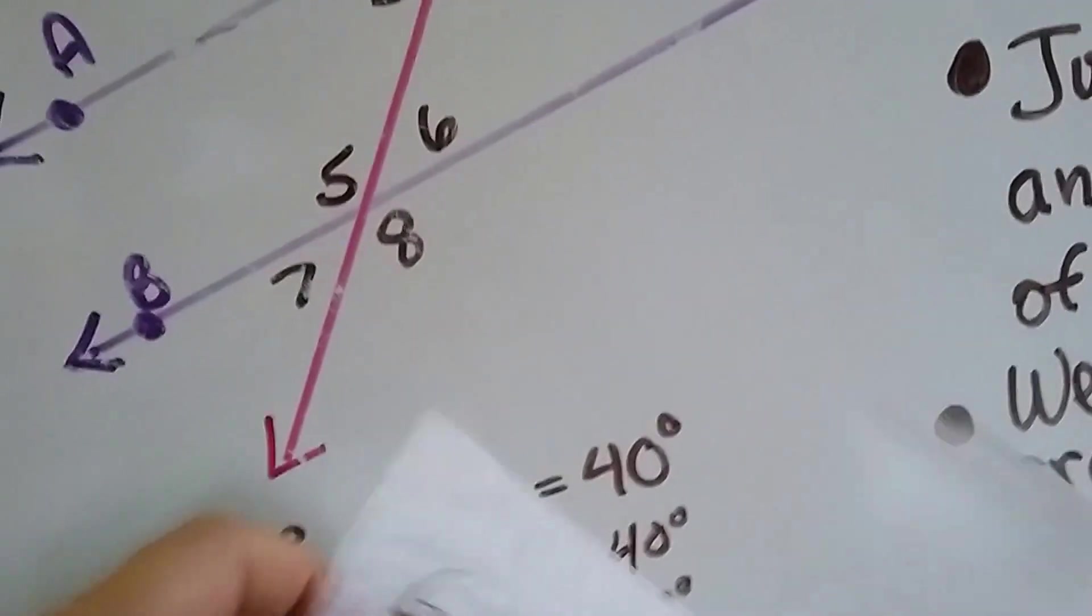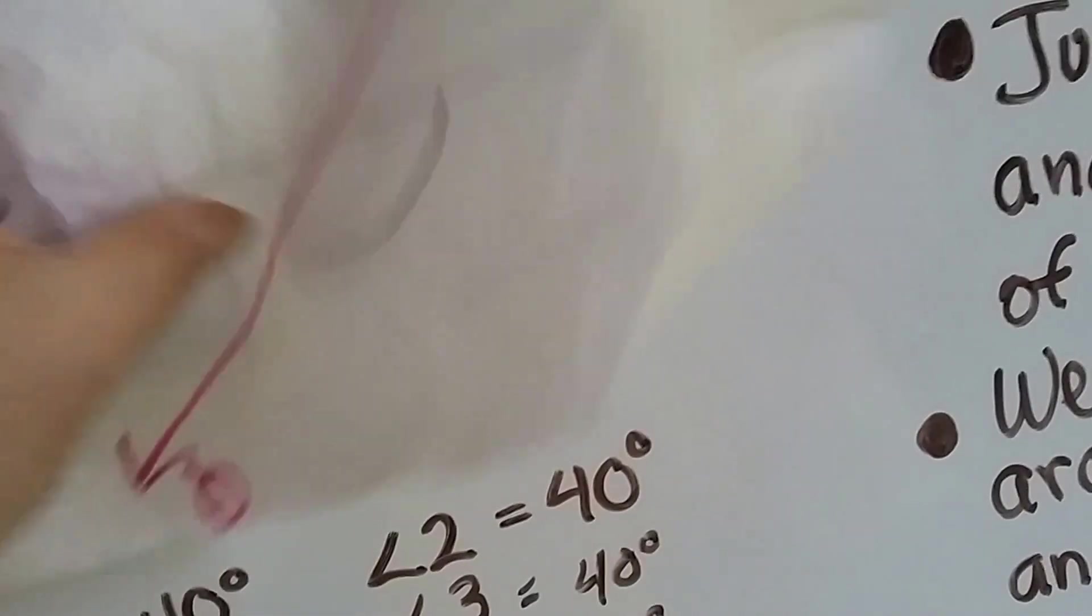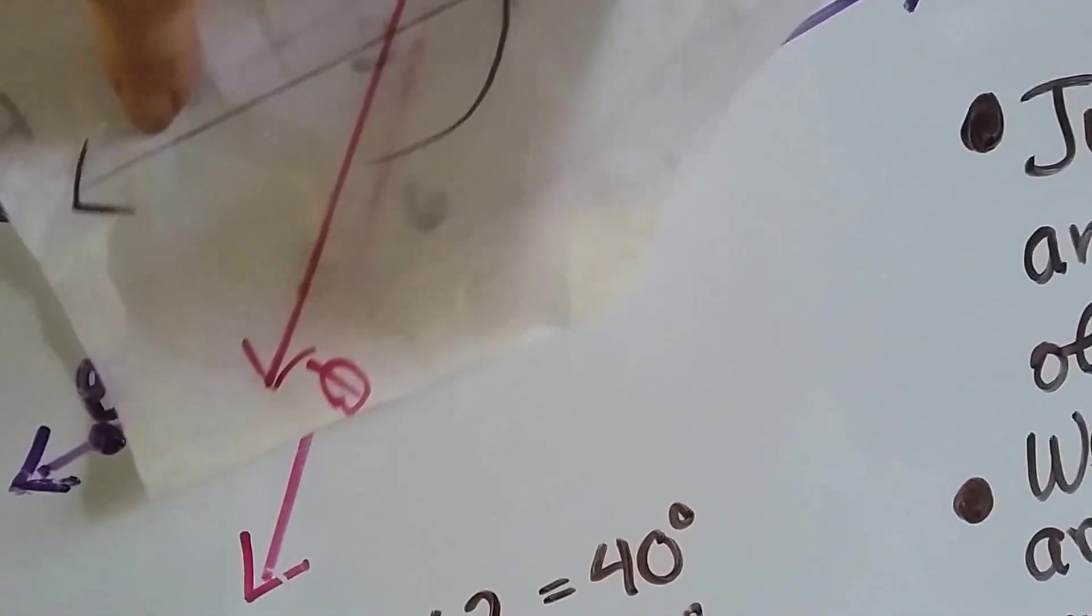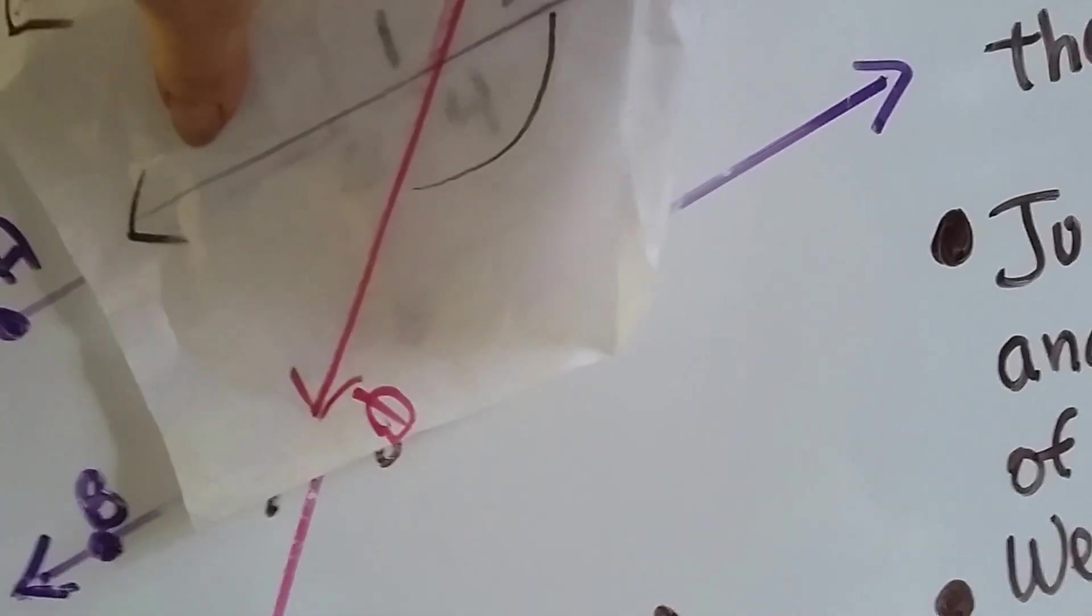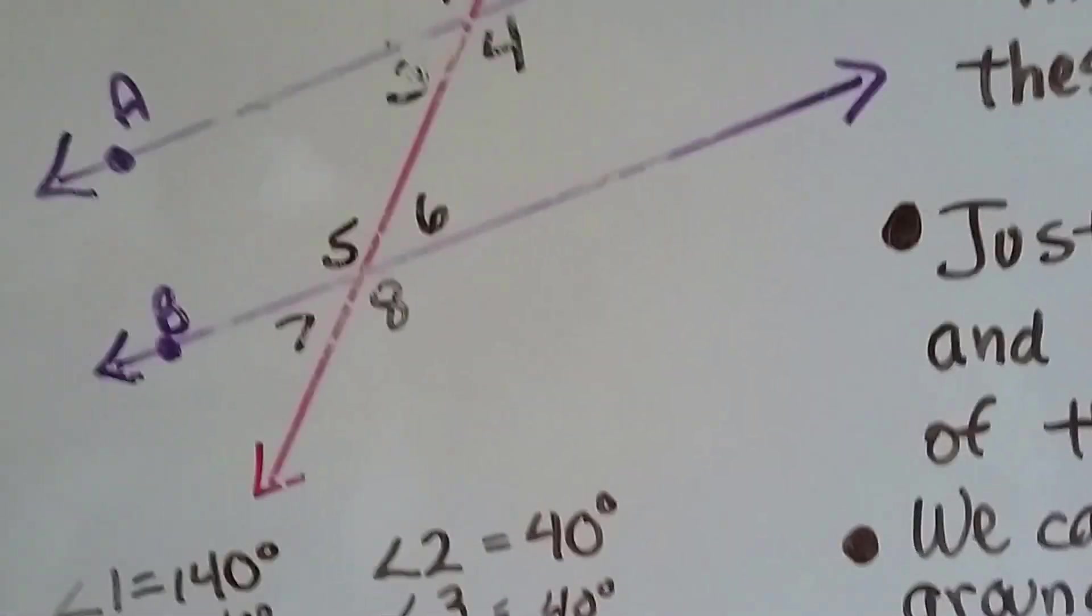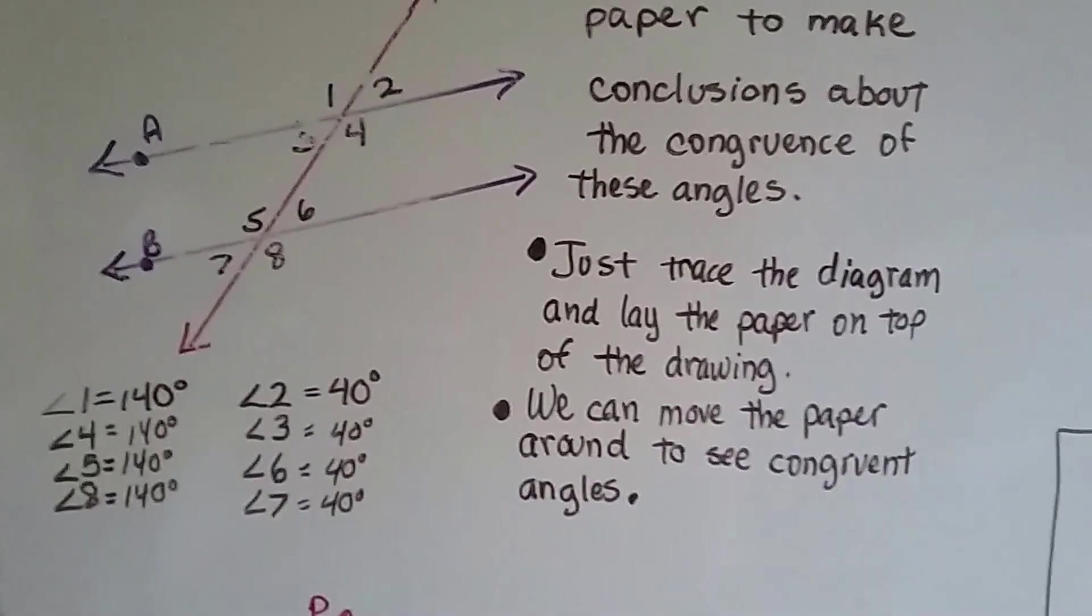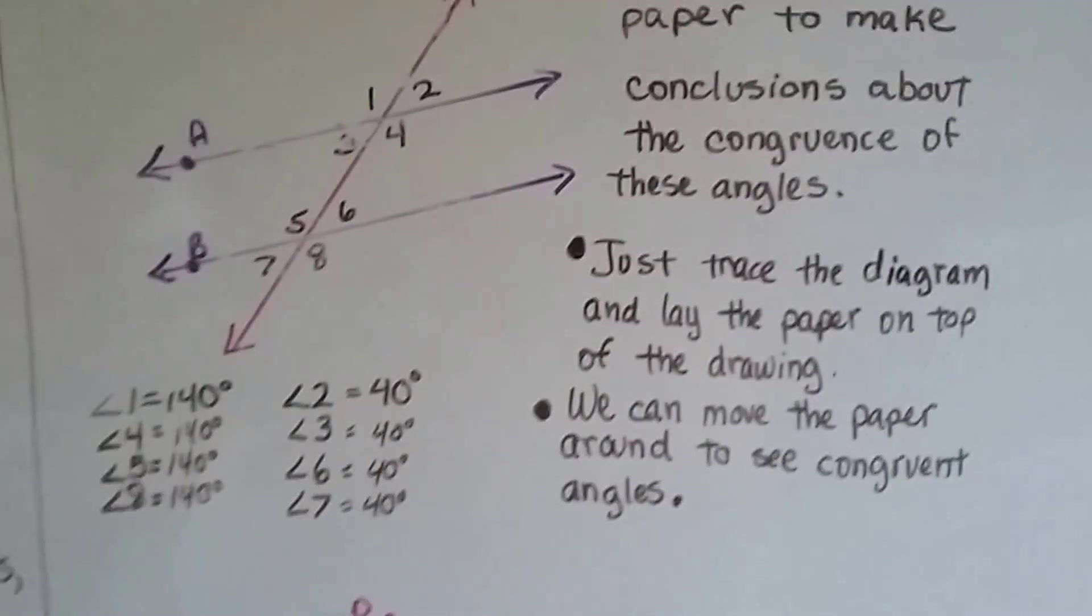And we can even flip this around and turn it upside down. And we can see that the angle 1 matches with angle 8. And it matches with angle 4. So you can use tissue paper to help you casually justify that these angles are the same.